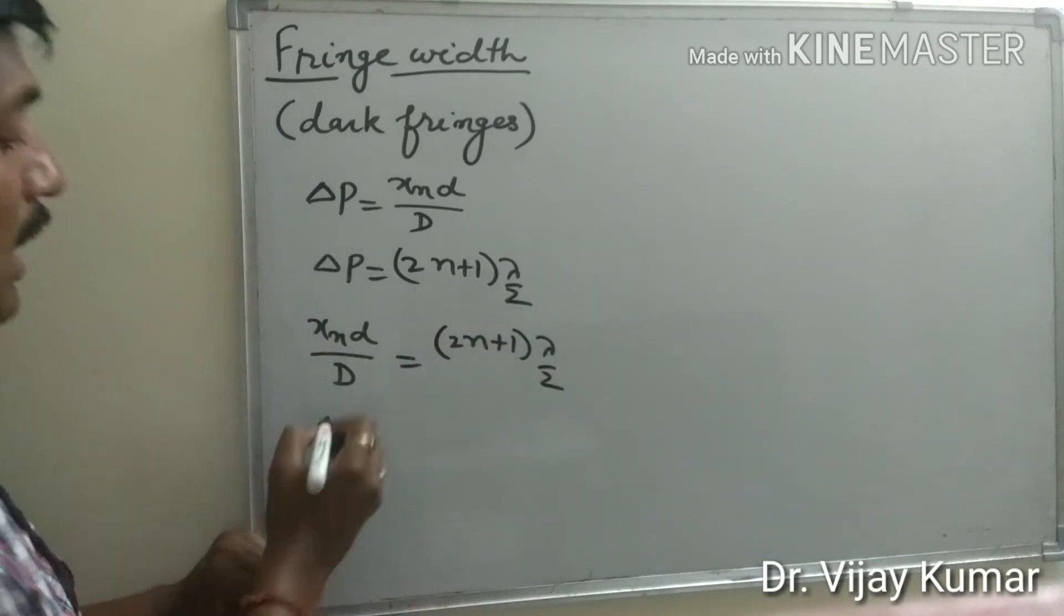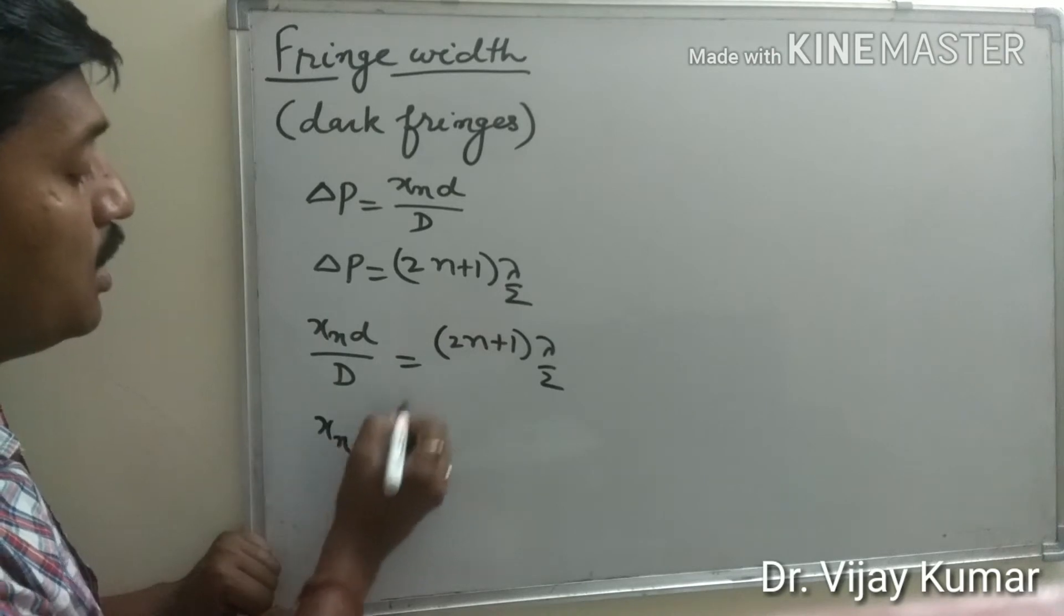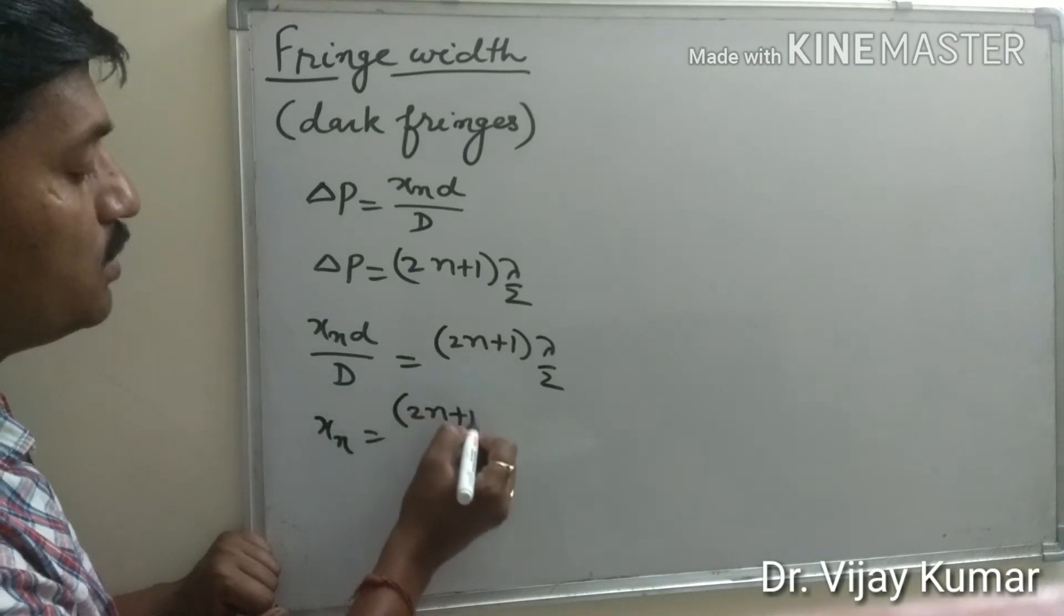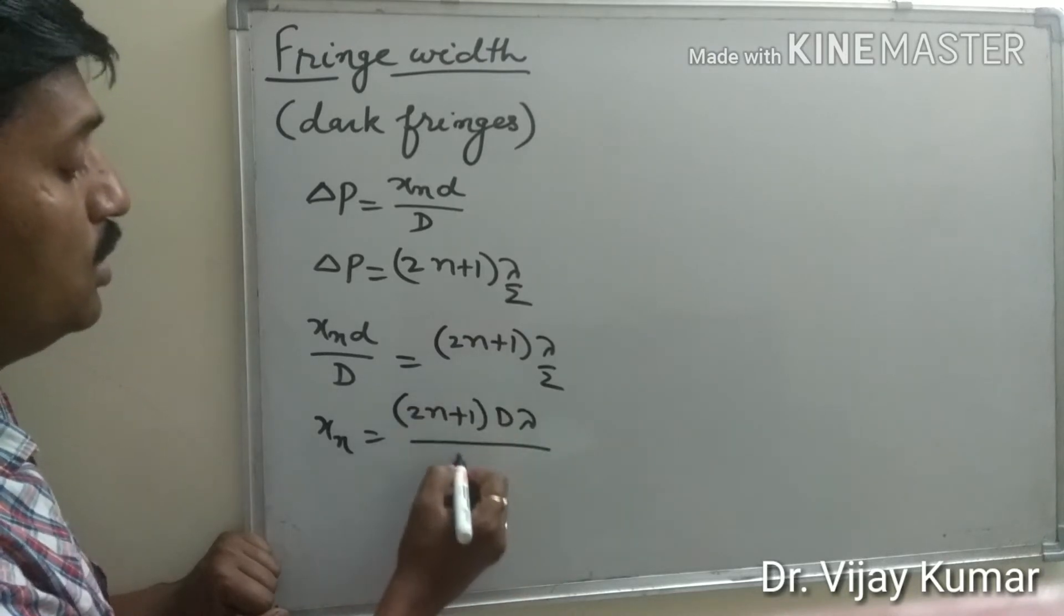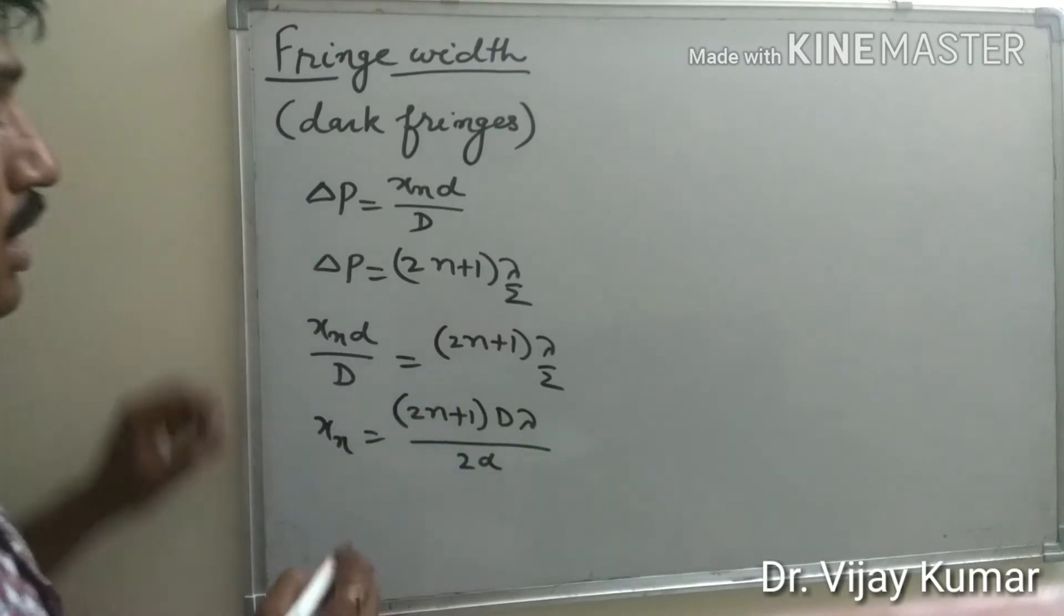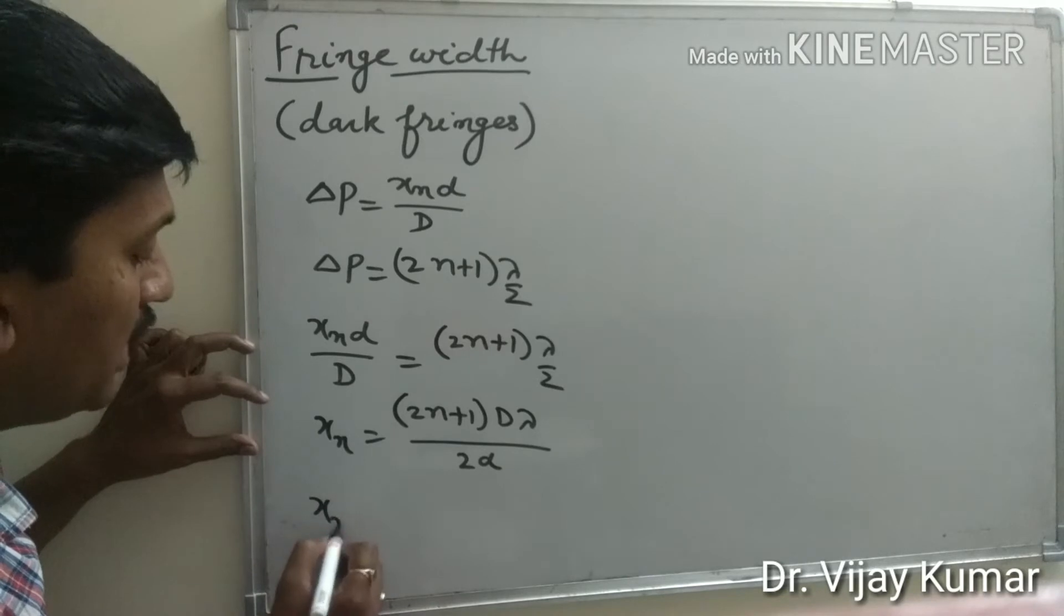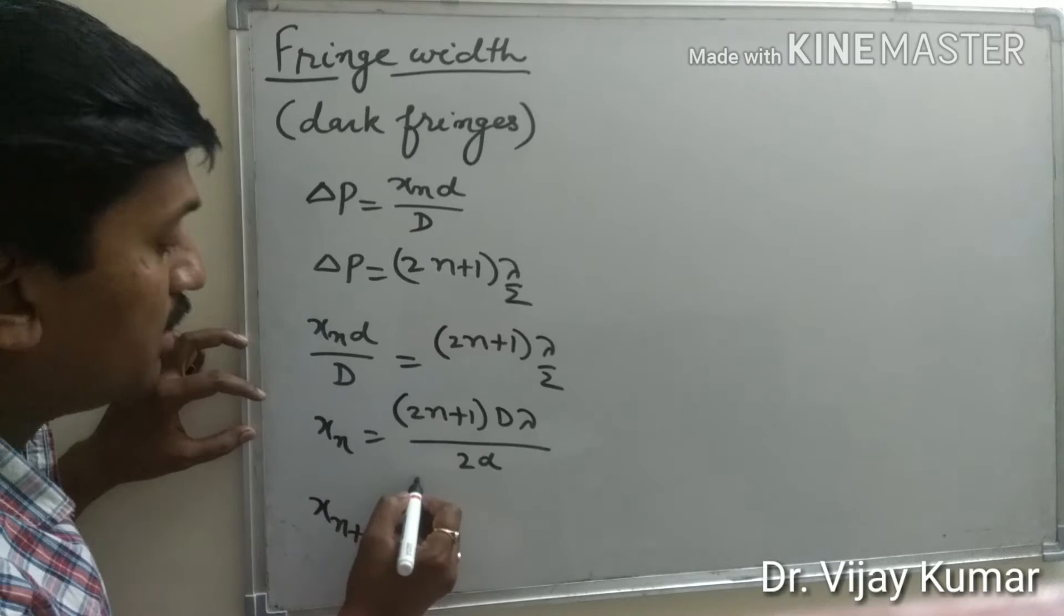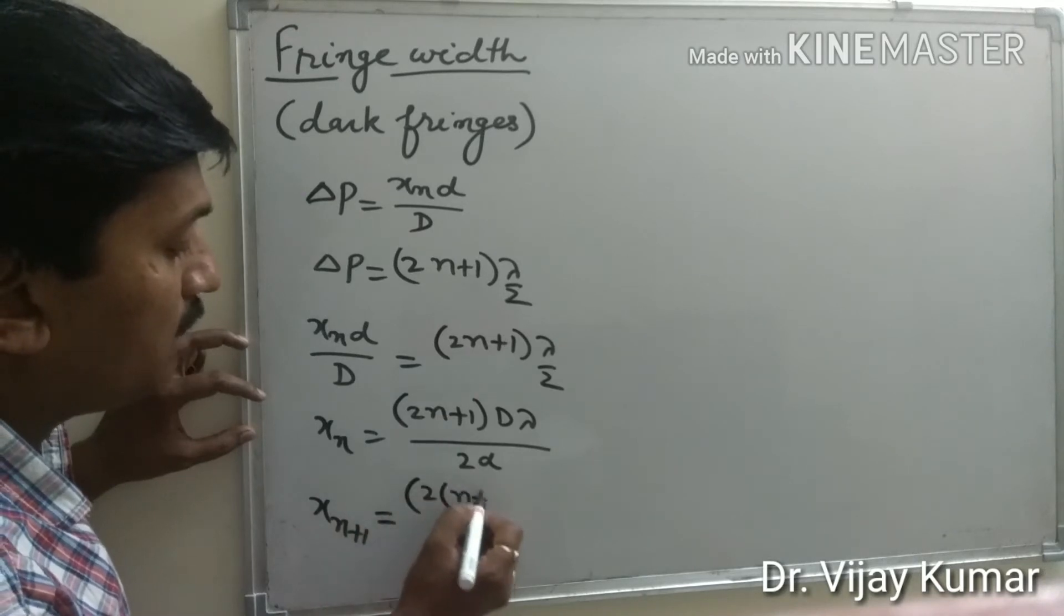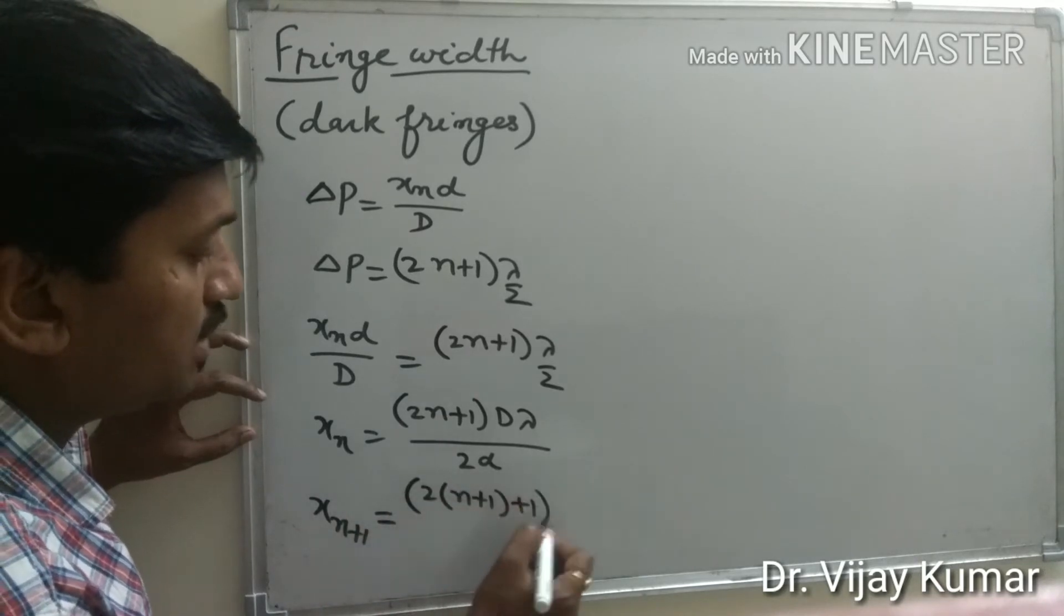So xn = (2n+1)Dλ/2d. For the position of the (n+1)th dark fringe, n is replaced by n+1, giving 2(n+1)+1.